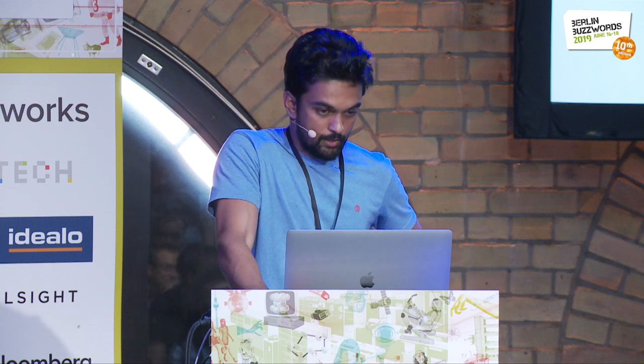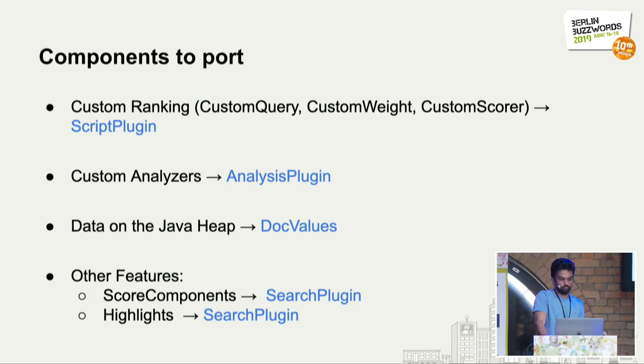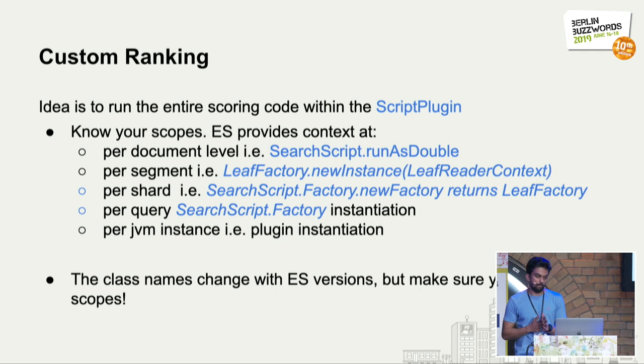Other teams at Yelp had been using Elasticsearch for smaller use cases, so this seemed like a natural fit — it was JVM-based again. Since we have a lot of code in Java, Elasticsearch has a plugin API architecture where we can plug in our Java code. For most parts there's a one-to-one mapping: there's a script plugin, an analysis plugin, doc values, and an overarching search plugin that can override pretty much anything.